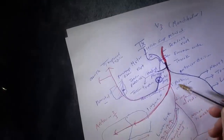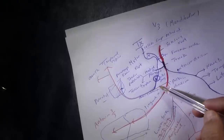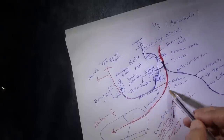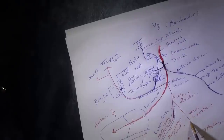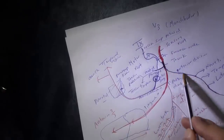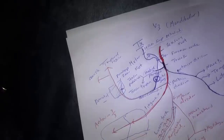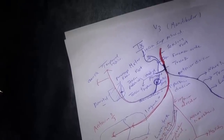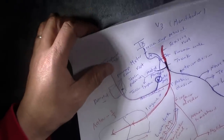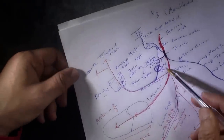Quick review of the posterior division: it gives three branches — auriculotemporal, lingual, and inferior alveolar — all mainly sensory, except for the tiny nerve to mylohyoid. The anterior division is mainly motor except for the long buccal nerve, which supplies the skin and mucous membrane around the buccinator.